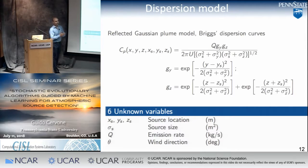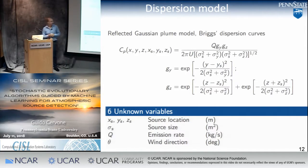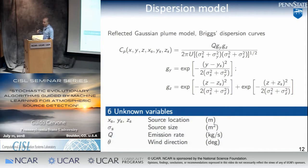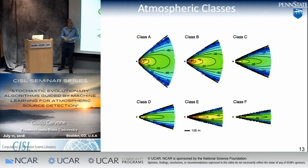Let's start with a simple dispersion model — a Gaussian plume model using the Briggs equations for modeling atmospheric stability. The unknown variables are location, size, emission rate, and wind direction. In this particular case I assumed I didn't know the wind direction, because it's usually one of the hardest measurements to know at high resolution in the field. The atmospheric classes go from A to F and are simulated using data collected at the time of the experiment, so those are real.